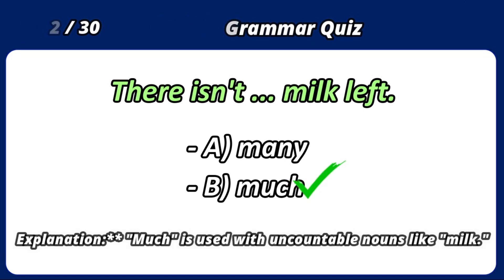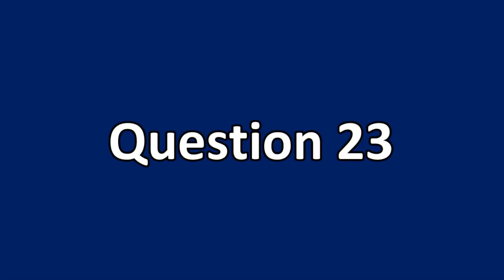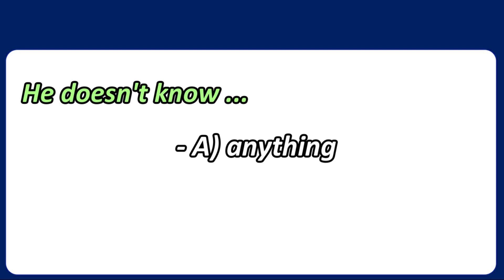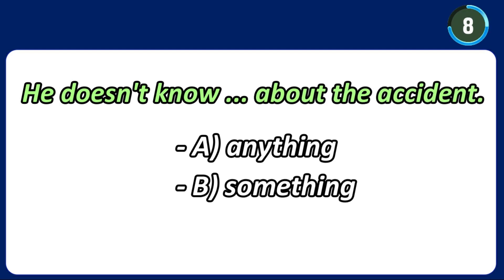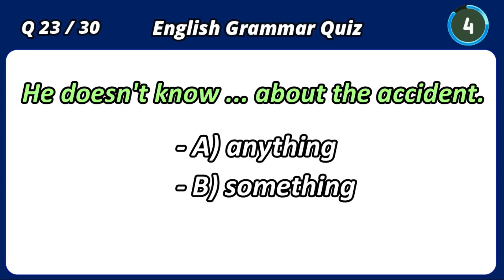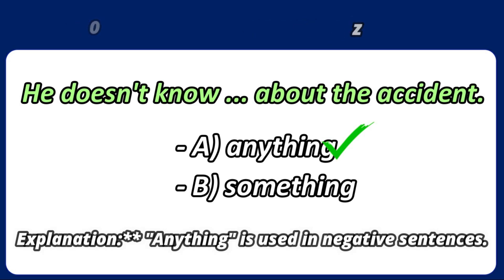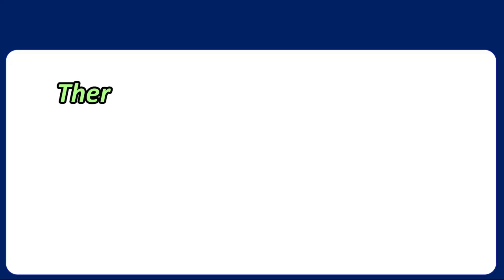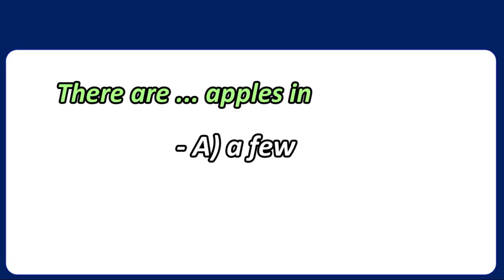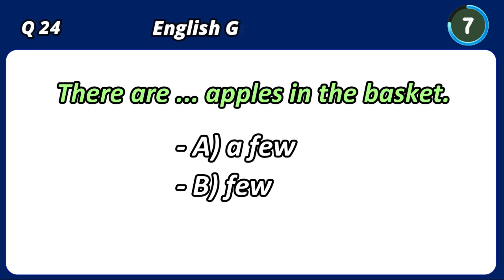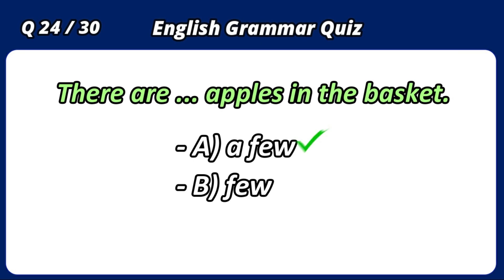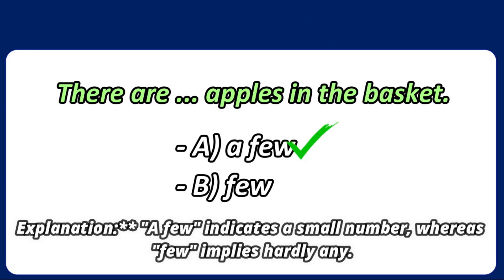Much is used with uncountable nouns like milk. Anything is used in negative sentences. A few indicates a small number, whereas few implies hardly any.